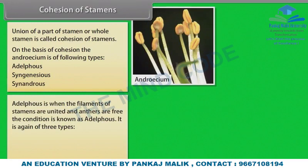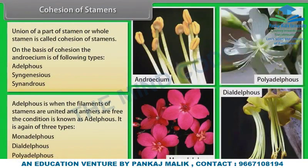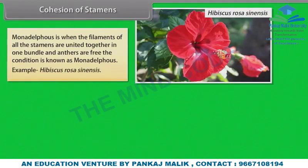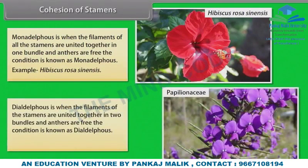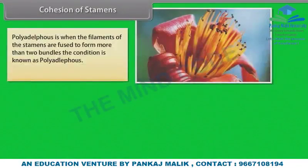Adelphous is again of three types: Monadelphous, Diadelphous, and Polyadelphous. Monadelphous is when the filaments of all stamens are united together in one bundle and anthers are free. Diadelphous is when the filaments of stamens are united together in two bundles and anthers are free, example Papilionaceae. Polyadelphous is when the filaments of stamens are fused to form more than two bundles, example Citrus.